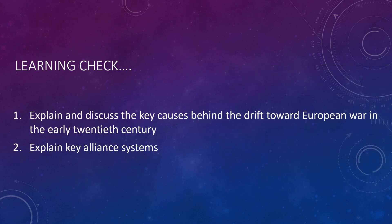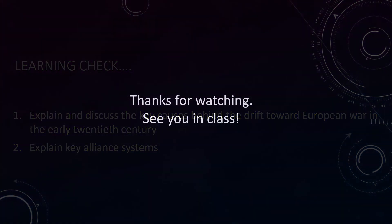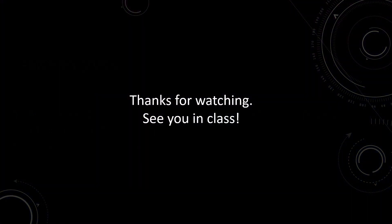As we wrap up the lesson for 7.2, The Causes of World War I, here are some key learning questions to ensure you understand: Can you explain and discuss the key causes behind the drift toward European war in the early 20th century? And can you explain key alliance systems? If so, great job. If not, go back and take another look. Don't forget to go to my website to look at the required supplemental videos that go along with this lesson. Thanks for watching, and I'll see you in class.